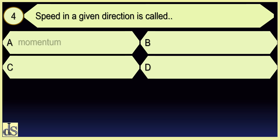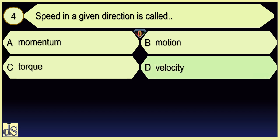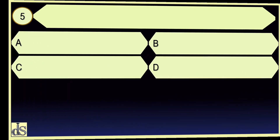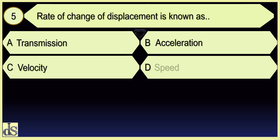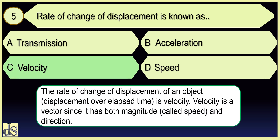Speed in a given direction is called Velocity. Rate of Change of Displacement is also known as Velocity.